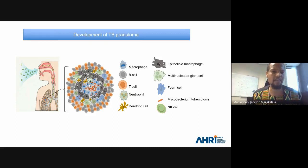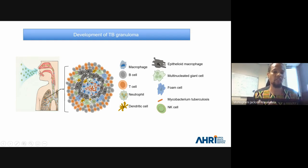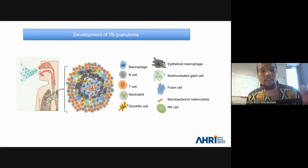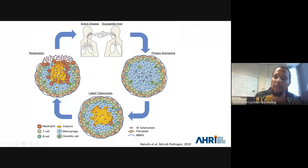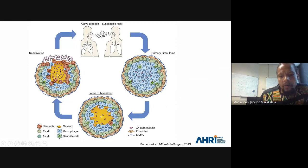Granuloma is a hallmark of pathological change in the lung as a result of TB infection. We believe a solid, intact granuloma contains bacteria at its center and helps stop the spread. However, during latency there can be formation of a caseating center — the so-called caseum, which is a cheese-like structure that forms in the middle of a granuloma. This caseum can liquefy and lead to the formation of cavities within the granuloma.